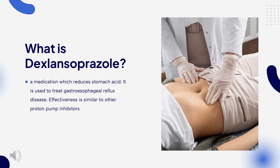Dexlansoprazole, sold under the trade name Dexilant among others, is a medication which reduces stomach acid. It is used to treat gastroesophageal reflux disease. Effectiveness is similar to other proton pump inhibitors. It is taken by mouth.